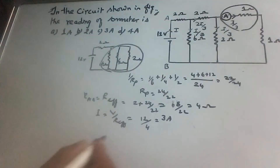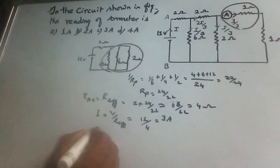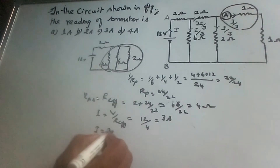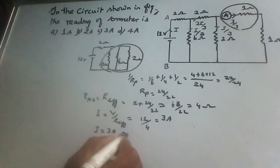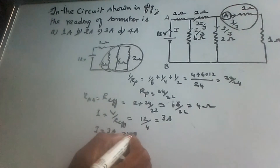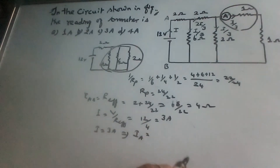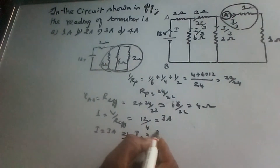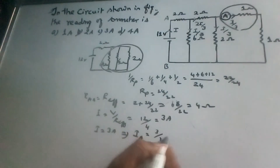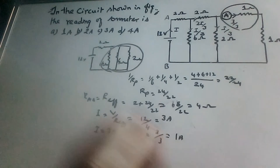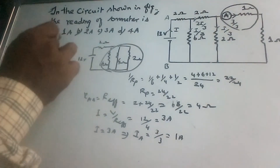The current through the ammeter equals I by 3 equal to 3 by 3 equal to 1 ampere. So the current through the ammeter is 1 ampere, and option (a) is correct.